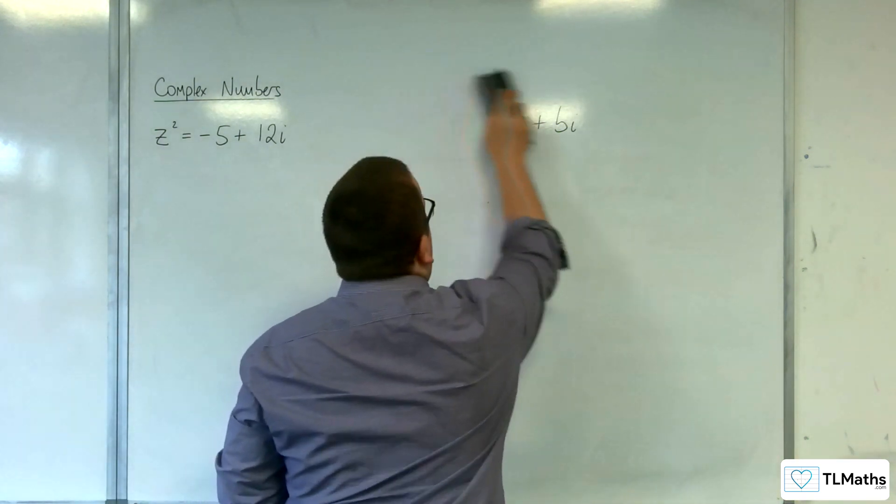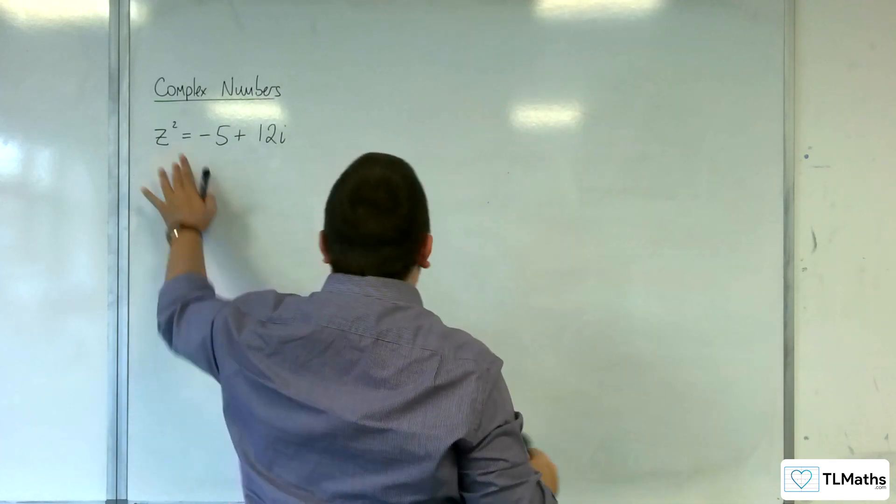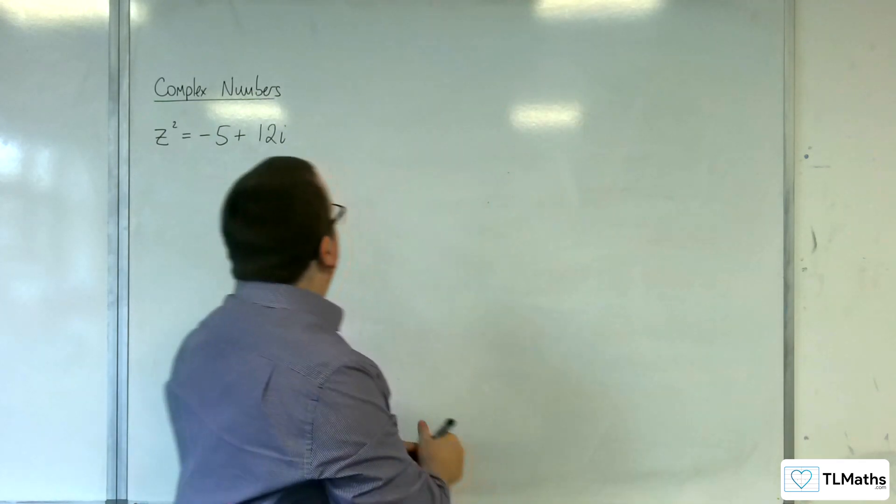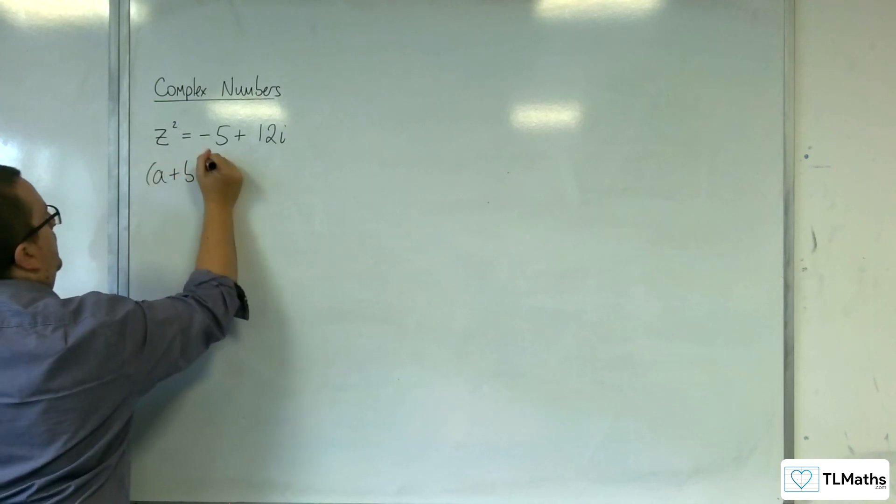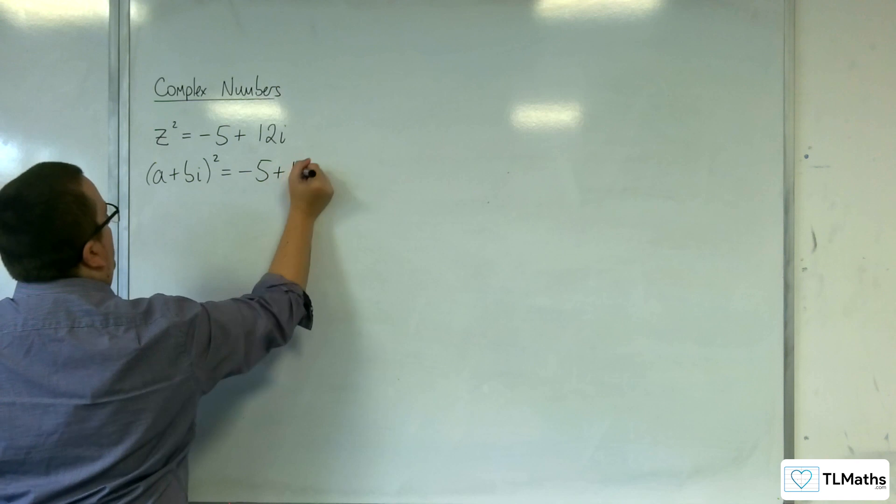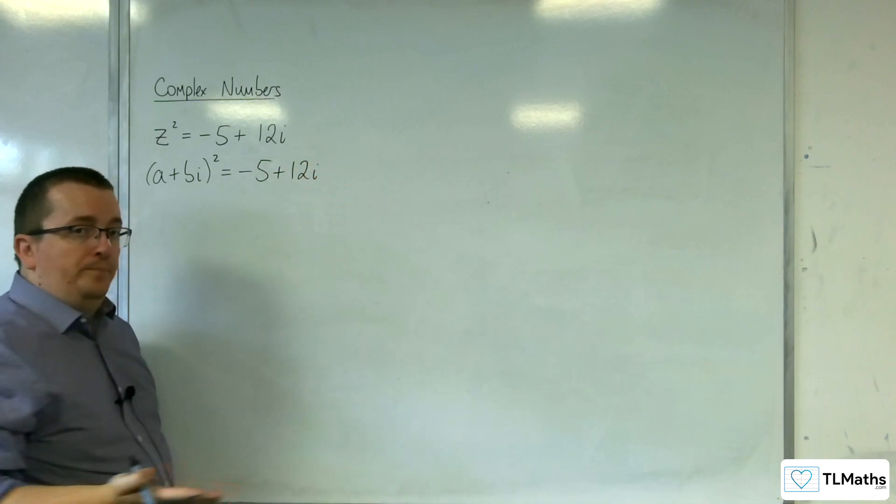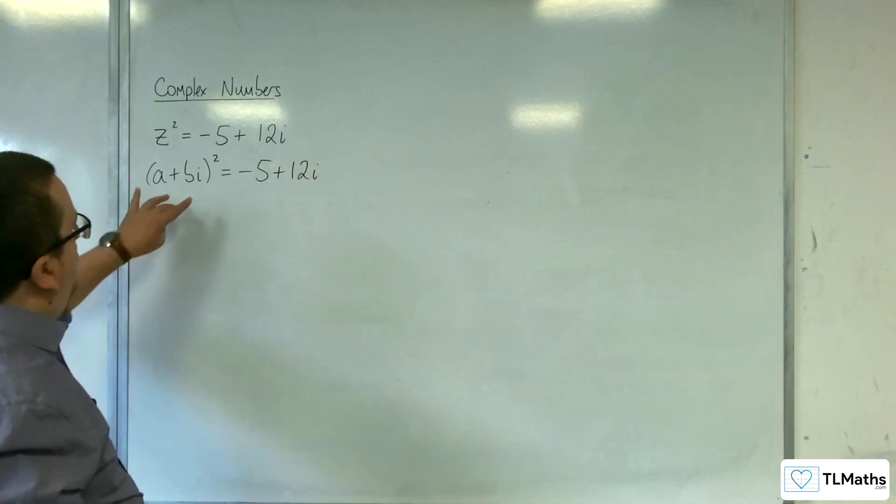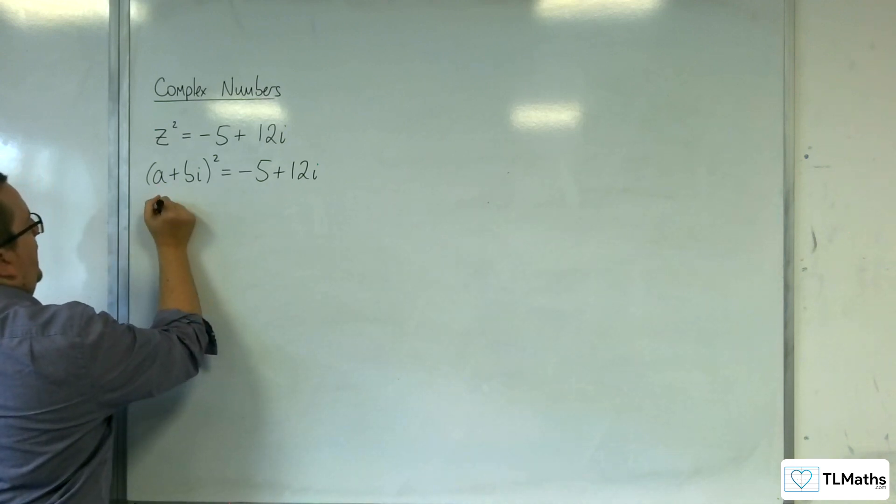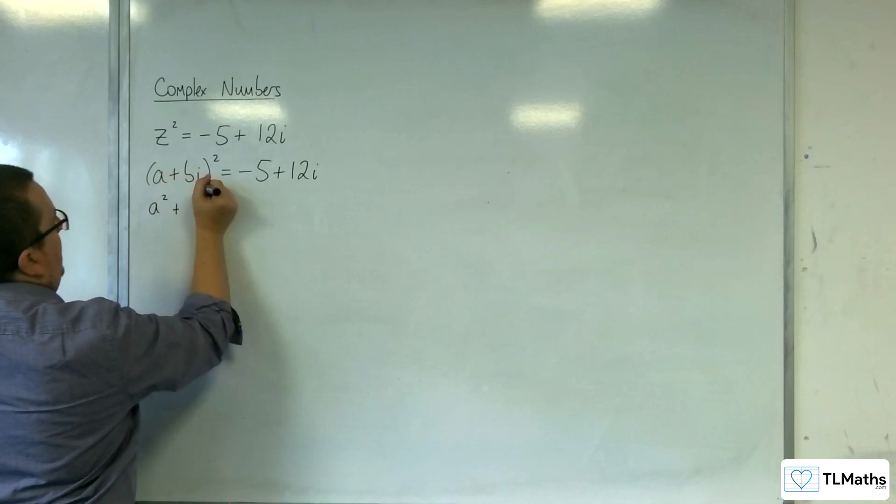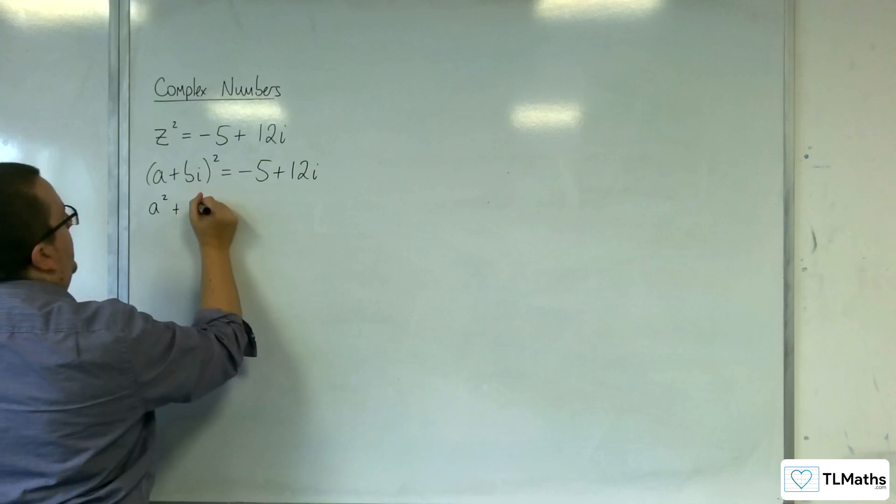So, the idea, then, is to replace that z with a+bi, and our job is to work out the a and the b. So, if we expand the left-hand side, we're going to get a² plus a times bi, so abi.